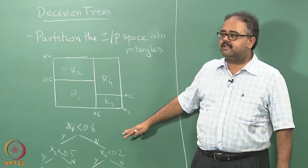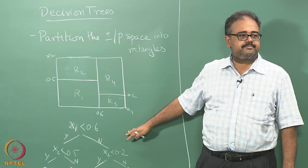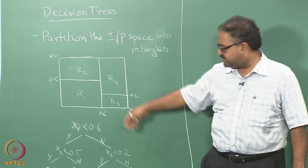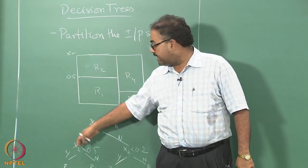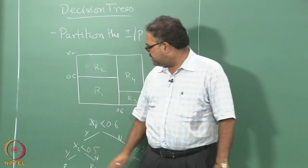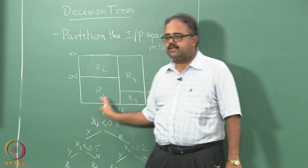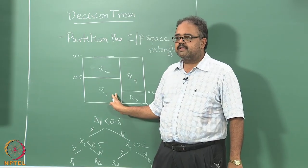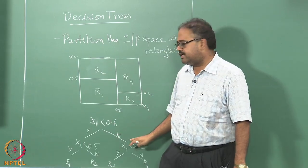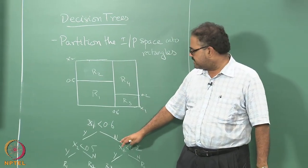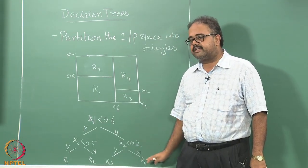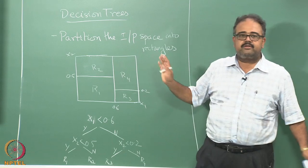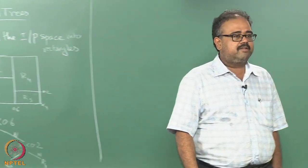I can very compactly represent this rectangle segmentation as a tree. You can see what is here: I'm asking the question is x1 less than 0.6. If it's true, I go to the right, and then again I ask is x2 less than 0.5. If it's true, I go to the right and I say this is r1. So I am essentially here, otherwise I am here. Then going to the other branch, which is x1 is greater than or equal to 0.6, I'm on this side. If it's less than 0.2, I'm in r3; if it's greater than 0.2, I'm in r4.